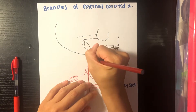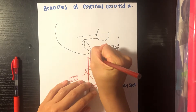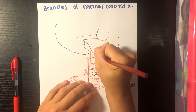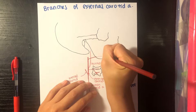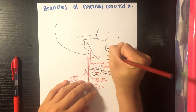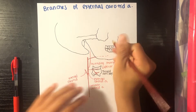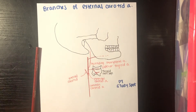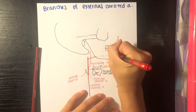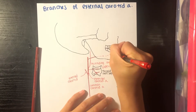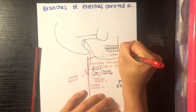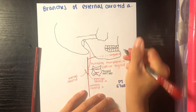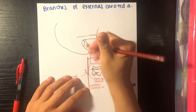Moving on, we have an artery kind of in the mandible area. The dotted lines represent that it's inside or medial to the bone, so it's not superficial. It's the lingual artery.